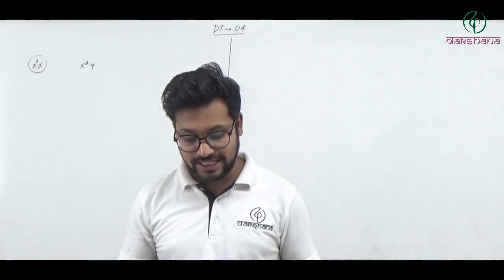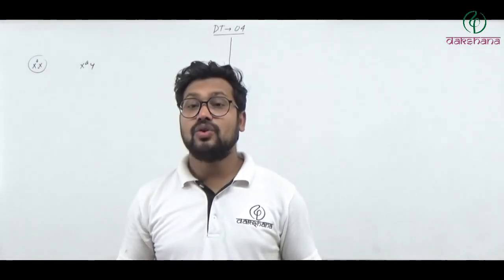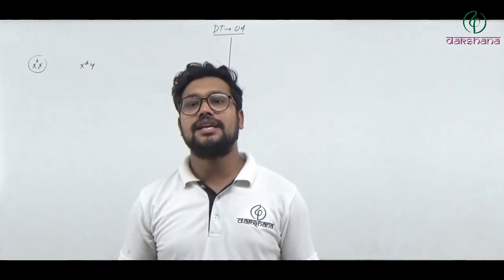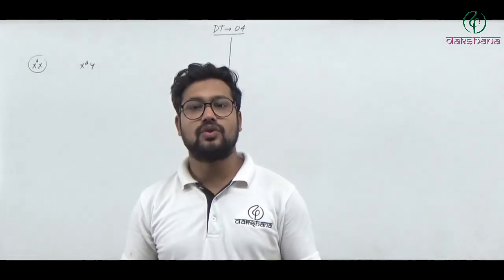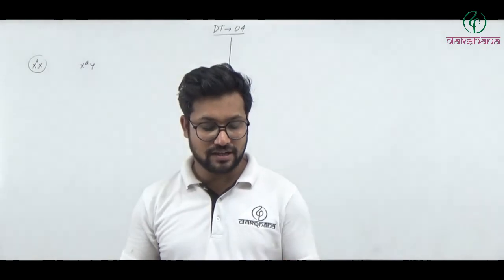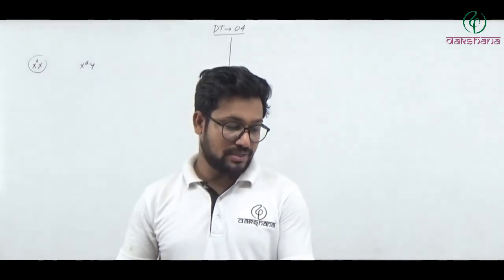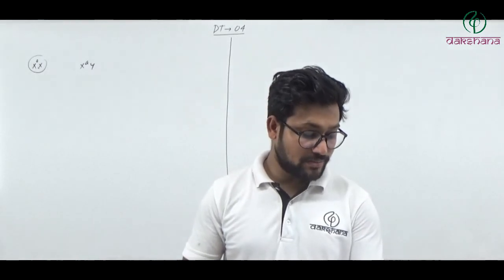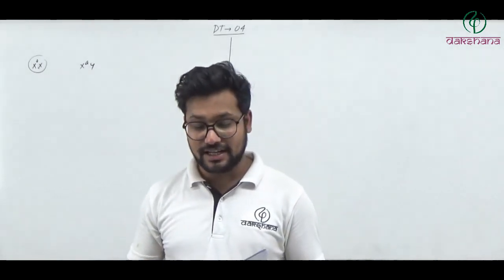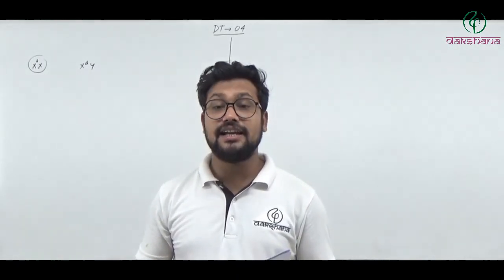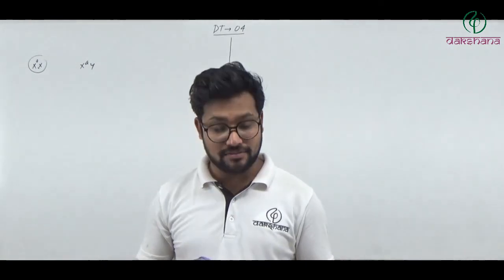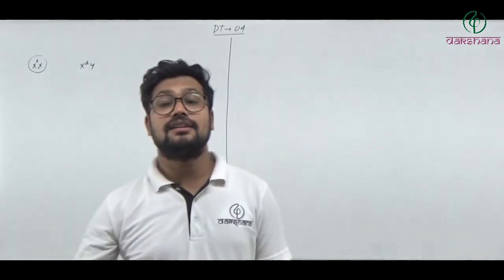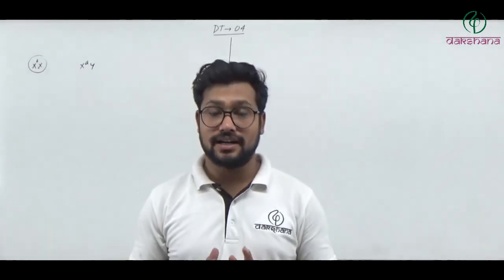Question number eighty-eight: Norin gene is the dwarf variety gene of wheat. The gene for dwarf variety of wheat is called Norin gene. Question number eighty-eight's second option is the right answer. Question number eighty-nine: Triticale is an intergeneric hybrid of wheat and rye. Question number eighty-nine's first option is the right answer.